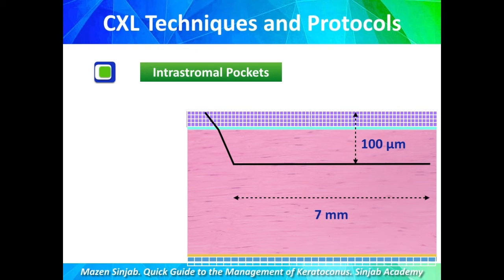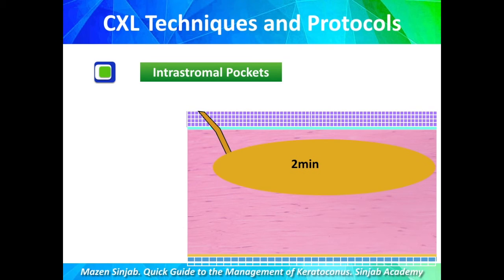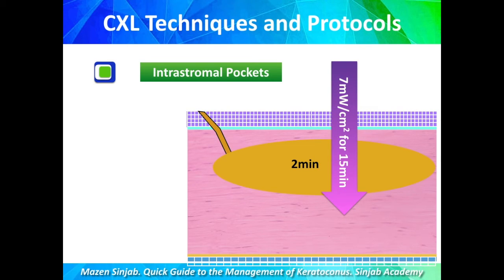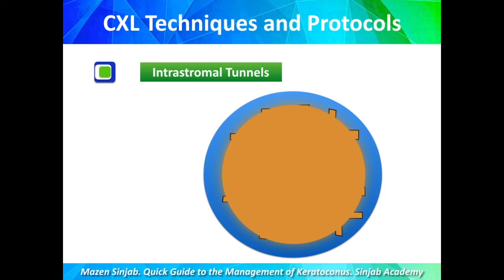For intrastromal pockets, a pocket 100 microns in depth from the corneal surface and 7 mm in diameter is created by femtosecond laser. Then 0.1 mL of isotonic riboflavin is injected twice into the pocket and left for two minutes to diffuse into the anterior stroma. UVA is then applied at 7 mW/cm² for 15 minutes. Intrastromal tunnels work on the same principle: femtosecond tunnels are created, riboflavin is injected, and after diffusion, UVA is applied.